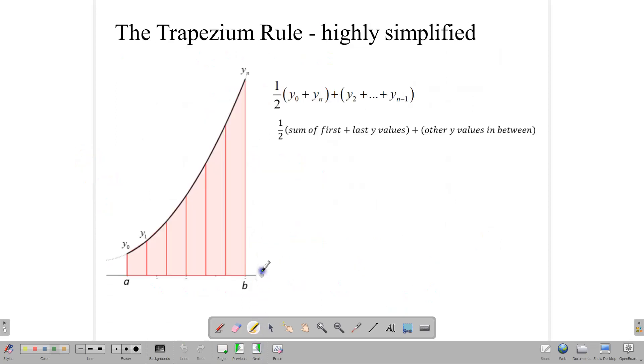The trapezium rule, then, is an idea derived from calculus where we can use algebra to calculate the area under a curve. Given a curve, we call this curve y equals x to some power. What we do is look at the y values between the two points we're measuring from. If we want to find the area between two x values a and b, then we look at the corresponding y values for a and b and all the y values in between.